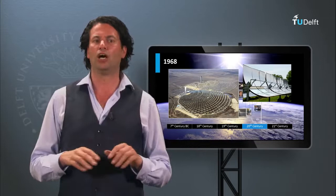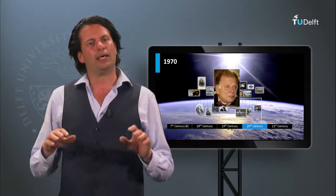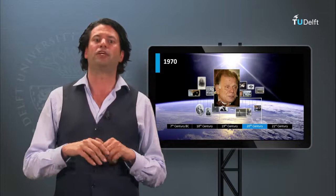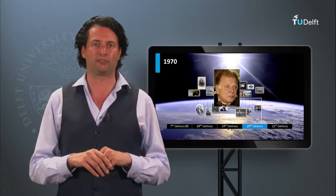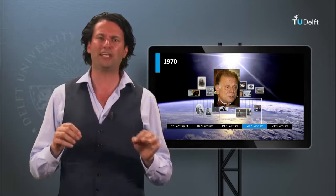In 1970 in the Soviet Union, Zhores Alferov developed the high-efficiency solar cell based on gallium arsenide heterojunction solar cells. This is the first demonstrator of a solar cell based on 3-5 semiconductor materials. We will discuss this technology in week 5.